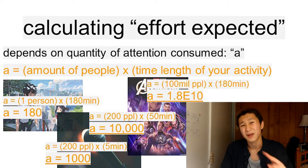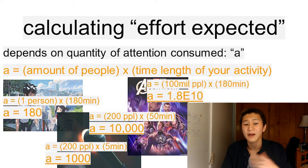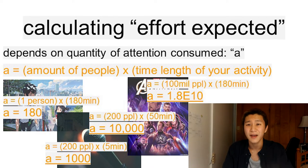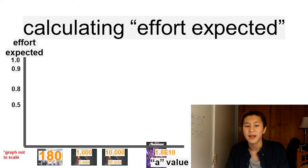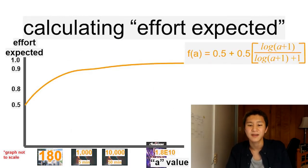Avengers Endgame, a three-hour film watched by over 100 million viewers, has an A-value of 1.8 times 10 to the 10th. Once we know the A-value, we can estimate the effort expected as a function, equal to 0.5 plus 0.5 times the log of A plus 1 over the log of A plus 1 plus 1.